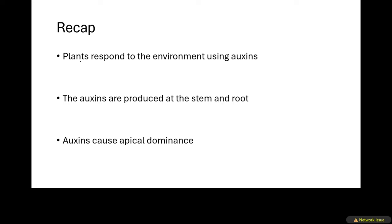In our previous video we discussed that plants respond to the environment using hormones known as auxins. Just like humans respond to the environment, plants also respond using auxins. These auxins are produced at the stem and root, and they can cause a process known as apical dominance. We hope you watch that video before you proceed so you have a clear understanding of what auxins are.